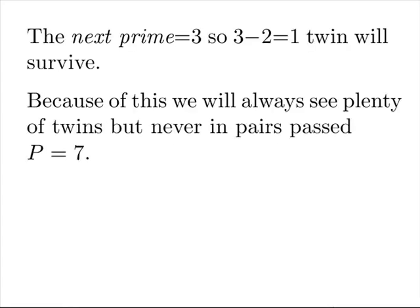The next prime is three, so three minus two equals one. A single twin will survive the composite killing machine. Because of this, we will always see plenty of twins, but never in pairs past seven as a prime number.